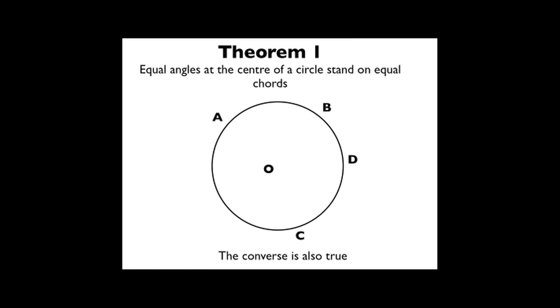The first theorem is that equal angles at the centre of a circle, in this case O, stand on equal chords. The converse of that's also true. So if you have equal chords they will produce equal angles at the centre of a circle.